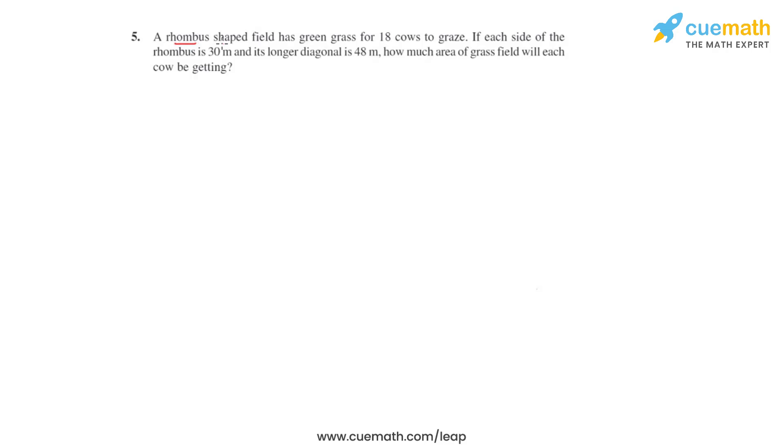Question number five says that a rhombus shaped field has green grass for 18 cows to graze. If each side of the rhombus is 30 meters and its longer diagonal is 48 meters, we have to find how much area of grass field will each cow be getting.